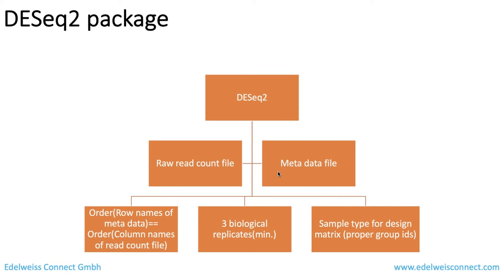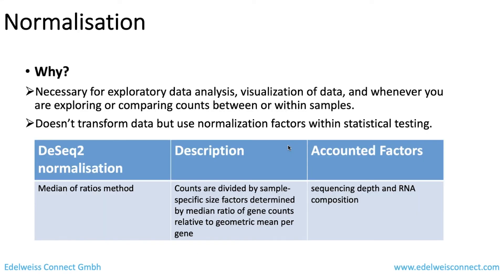The next step in DESeq2 is normalization. Why do we need it? Normalization scales your data because samples are processed under different conditions, causing variation. To perform comparative or exploratory analysis, you bring the data to one scale. DESeq2 uses the median of ratios method. This doesn't transform your raw data — it just uses normalization factors. It accounts for two important factors: sequencing depth and the RNA composition of each sample.